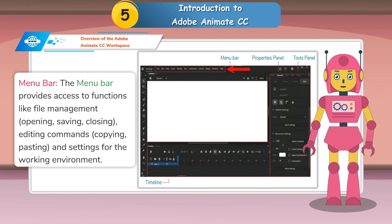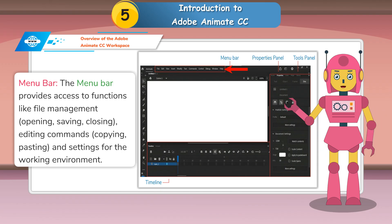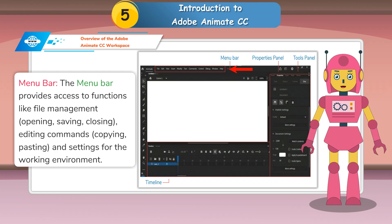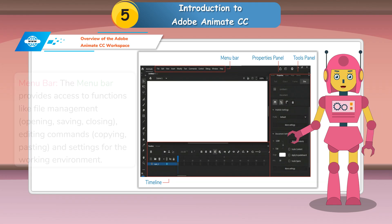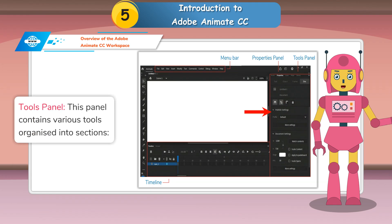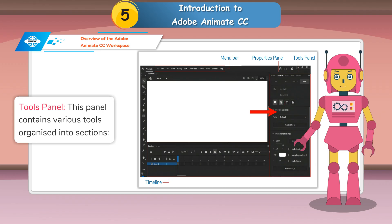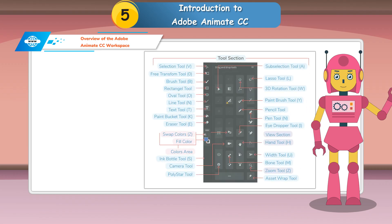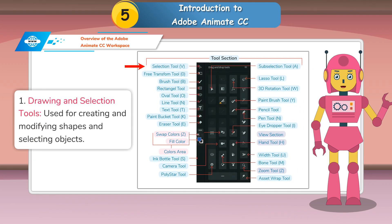To view only the stage, you can use the Clip to Stage feature from the Magnification option under the View tab. The Menu Bar provides access to functions like file management, opening, saving, closing, editing commands, copying, pasting and settings for the working environment. The Tools Panel contains various tools organized into sections.